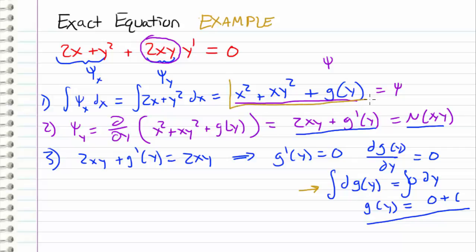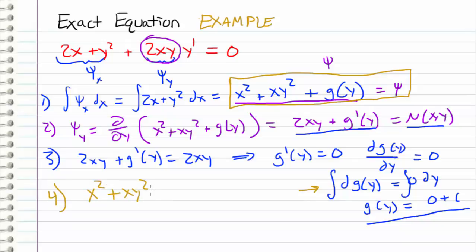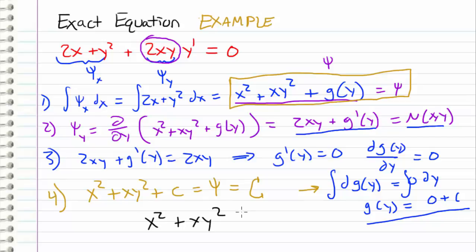We come back to our expression for psi in terms of g(y) and plug in. For the final step, x squared plus xy squared plus g(y), which is just a constant, gives us psi set equal to a constant. We define psi implicitly by setting this all equal to a constant. Combining both constants, we get x squared plus xy squared equals a constant. This implicitly defined function is our unknown function psi — this is your answer.